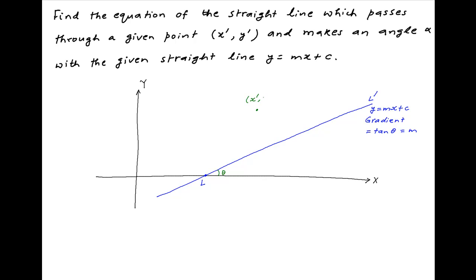Now, we are given the point x-dash, y-dash. Let's denote it by P. From P, it is possible to draw a line that cuts the line LL-dash and makes an angle alpha with it. Let's assume that this line cuts the given line LL-dash at the point M, and cuts the x-axis at the point R, and that it makes an angle phi with the positive direction of the x-axis.